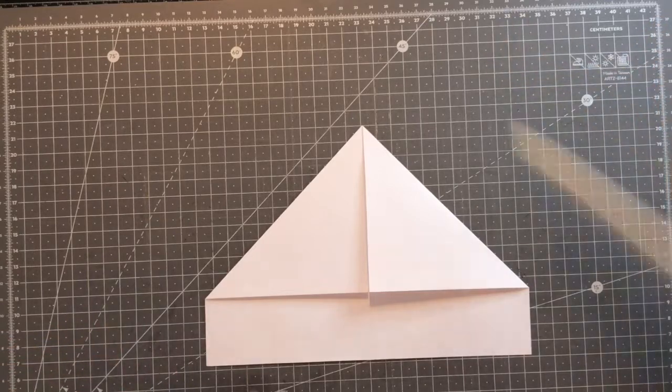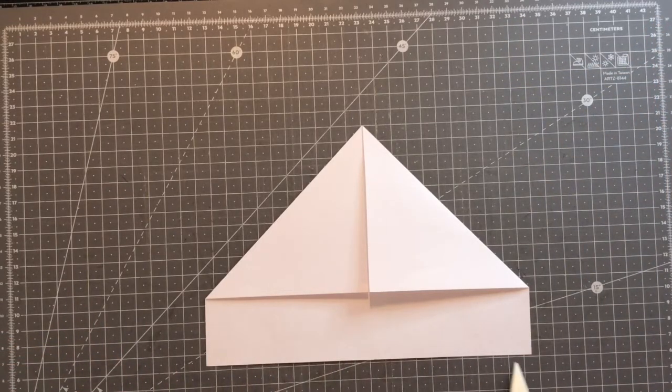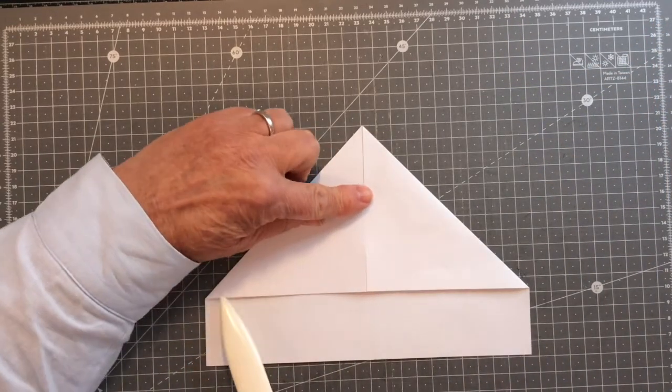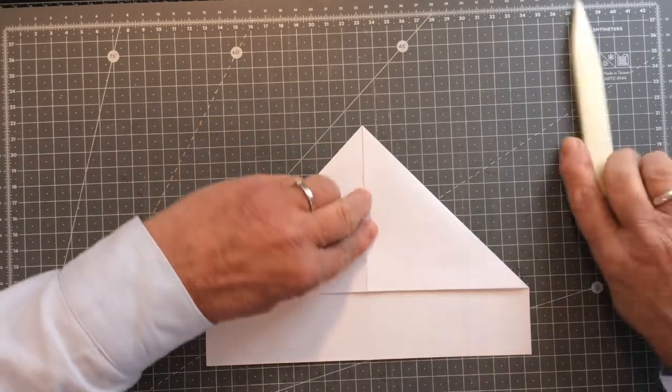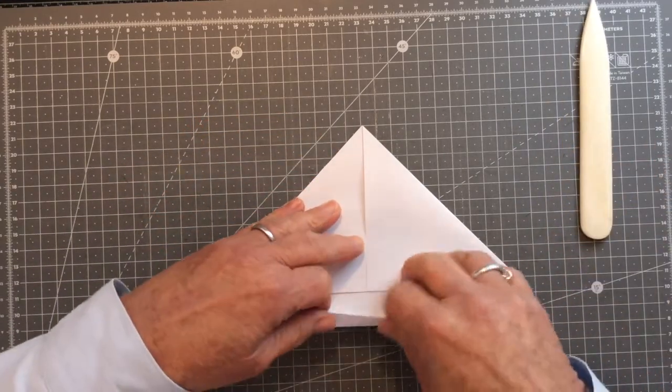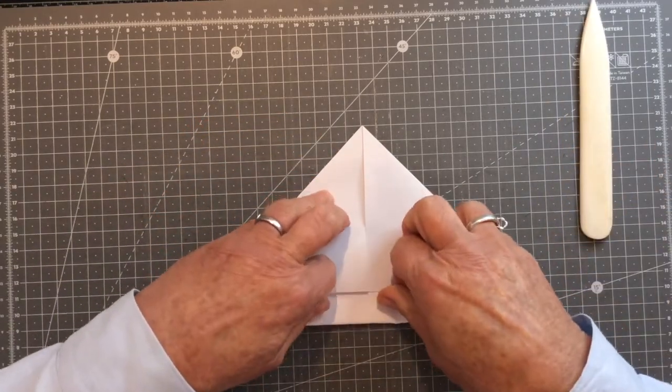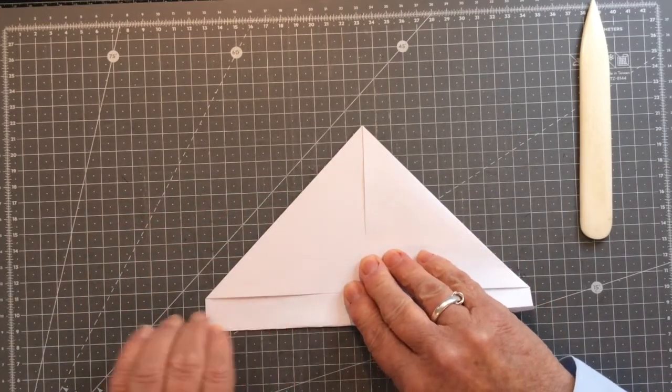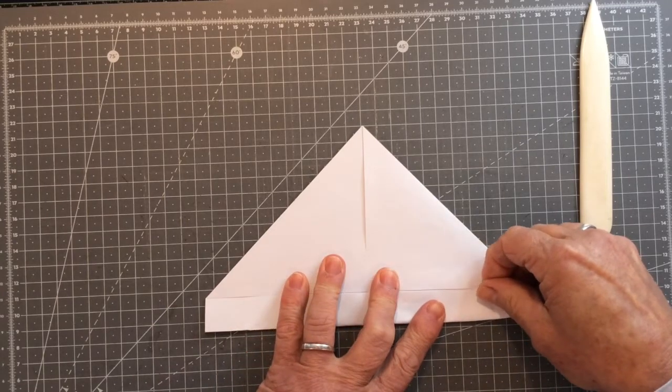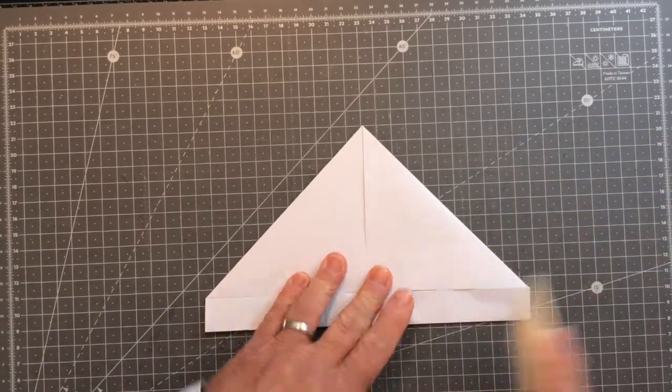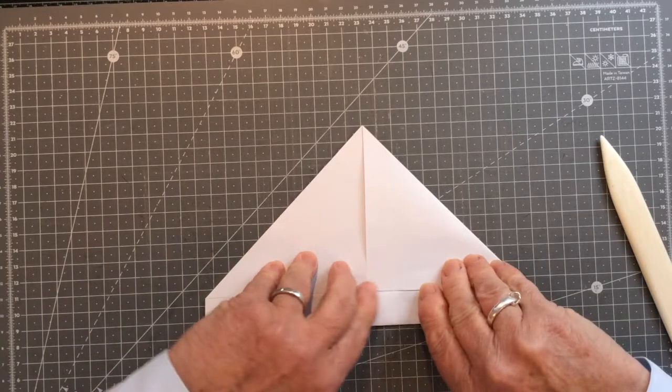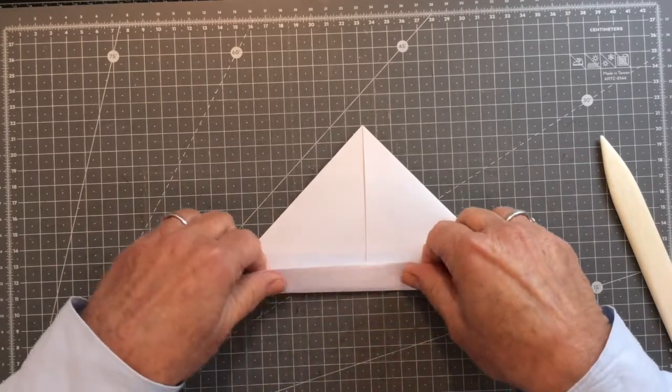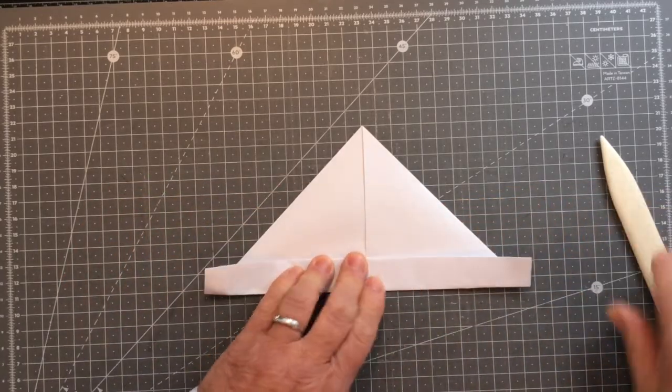Right, what we're going to do now is we're going to fold this bottom edge up to this edge up here so just take a piece of paper and fold it up like so. Okay, and now we're just going to fold it up again like so.